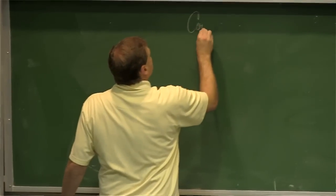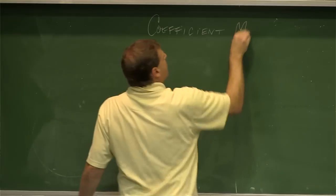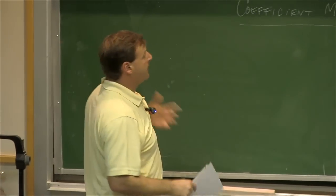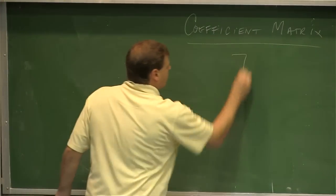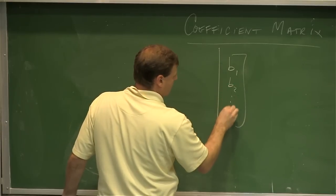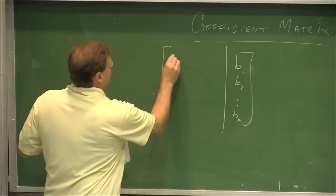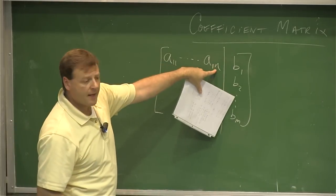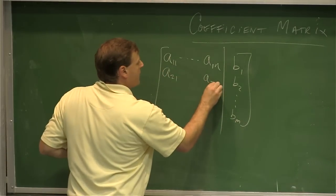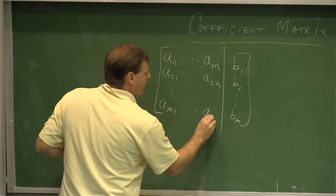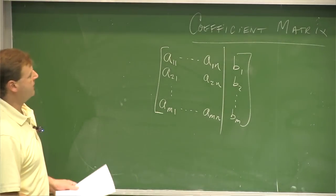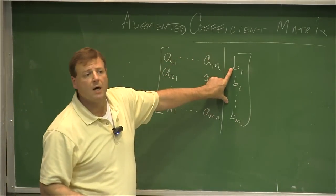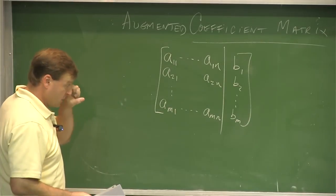Putting this in matrix form gives the coefficient matrix. On the right side I have all the constants b1, b2, down to b sub m. The entries go a11 across to a1n, then a21 to a2n, down to am1 to amn. This is called the augmented coefficient matrix — augmented because we're adding the constants on the right side.